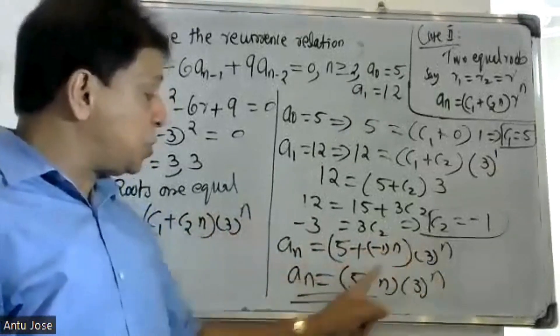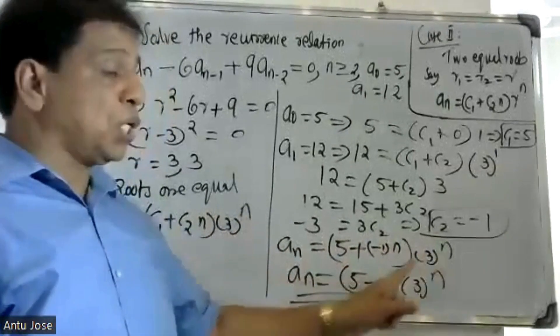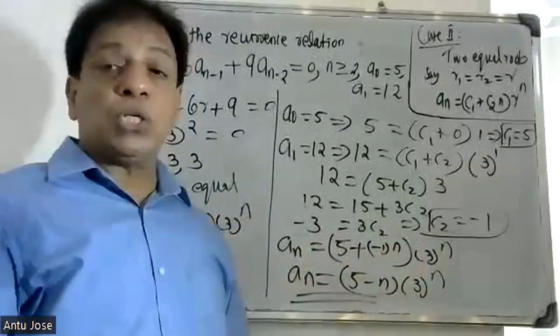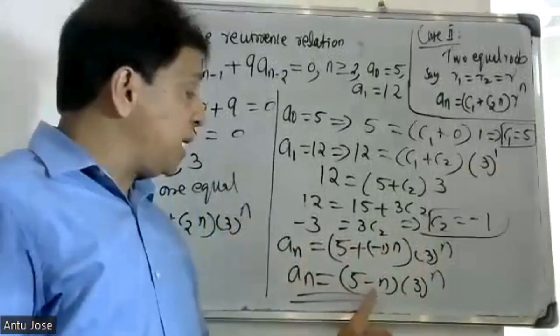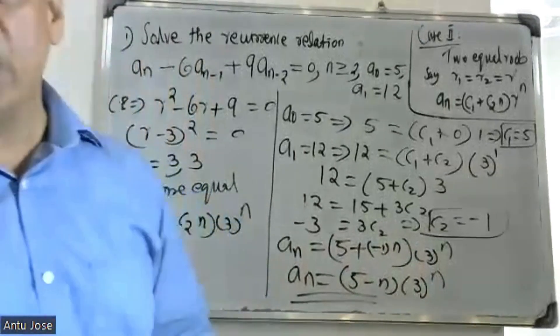3 raised to n. So the final solution is: a(n) = (5 - n)·3^n, where n is the final solution.